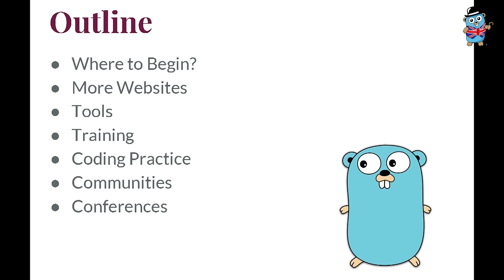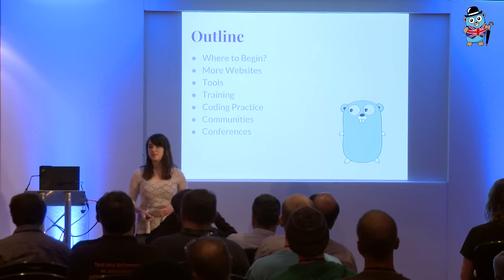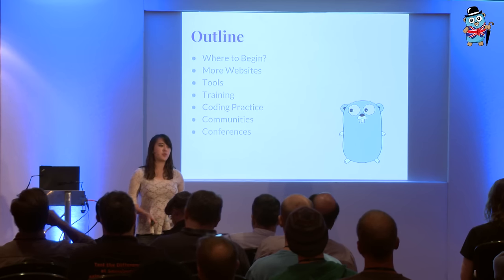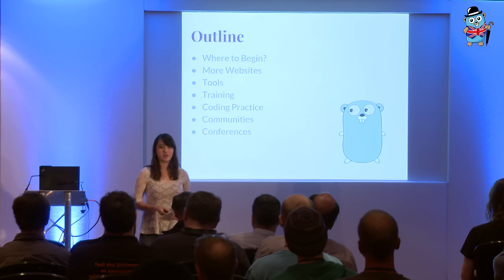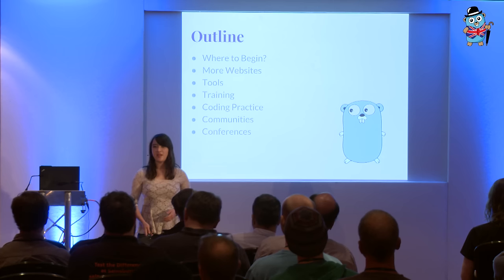So this is the outline of my talk. I'm going to tell you where to begin, which is where I started, and I feel a lot of other people start as well. Then some more websites after that, some tools to help make it easier to learn Go, different types of training — online training, in-person training, workshops — different places to get coding practice, because though you are studying it, you actually need to code to practice to get better at it. Some of the different communities, because communities are a big part of being in Go. And then there are also conferences.